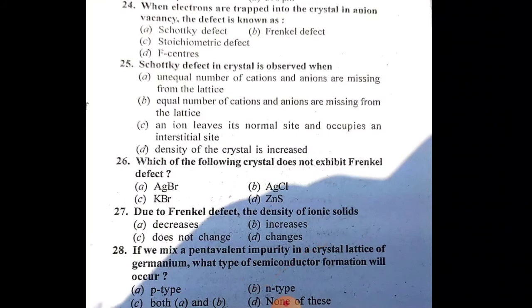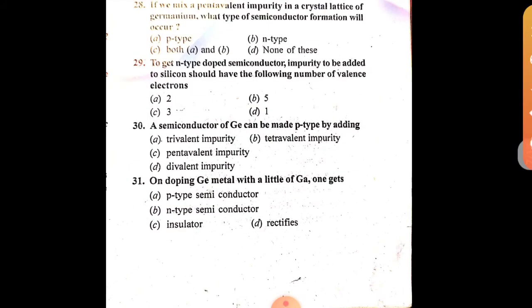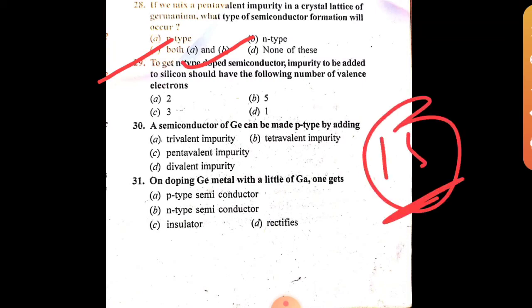Question 29: To get n-type semiconductor, the impurity to be added to silicon should have pentavalent properties - meaning group 15 with 5 valence electrons. The answer is option C.